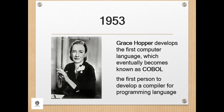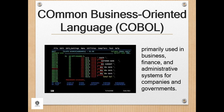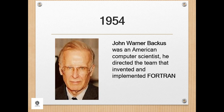In 1953, Grace Hopper developed the first computer language, which eventually became known as COBOL. Thomas Johnson Watson Jr., son of IBM CEO Thomas Watson Sr., conceived the IBM 701 EDPM to help the United Nations keep tabs on Korea during the war. COBOL, or Common Business-Oriented Language, is a compiled, English-like computer programming language designed for business use. It is imperative, procedural, and since 2002, object-oriented, with primary use in business, finance, and administrative systems for companies and governments.